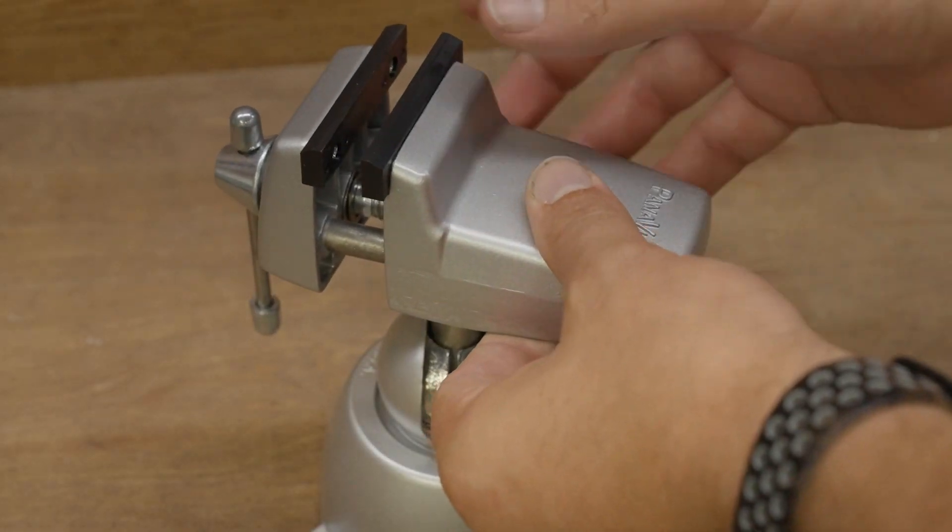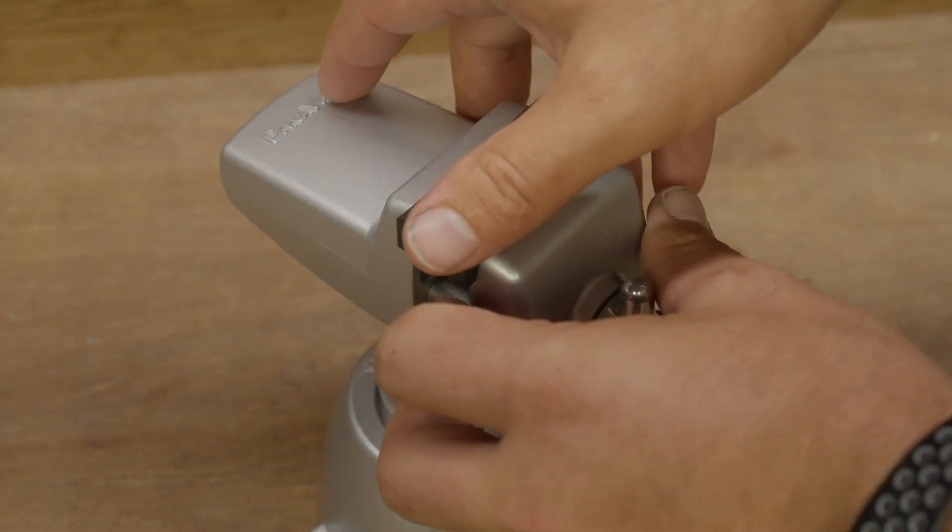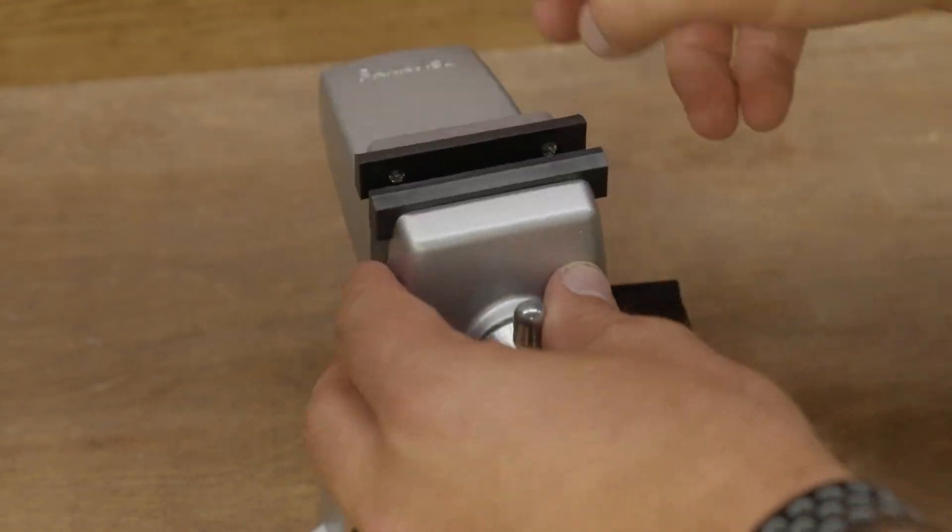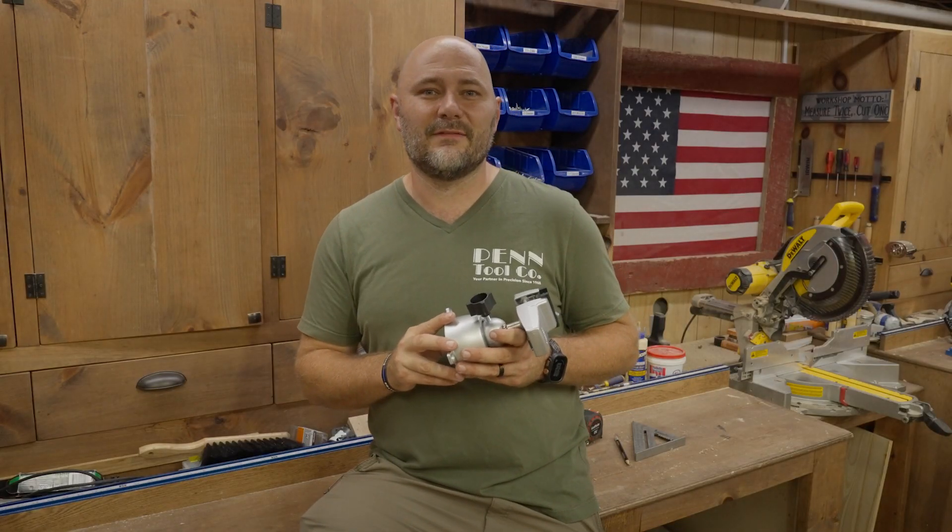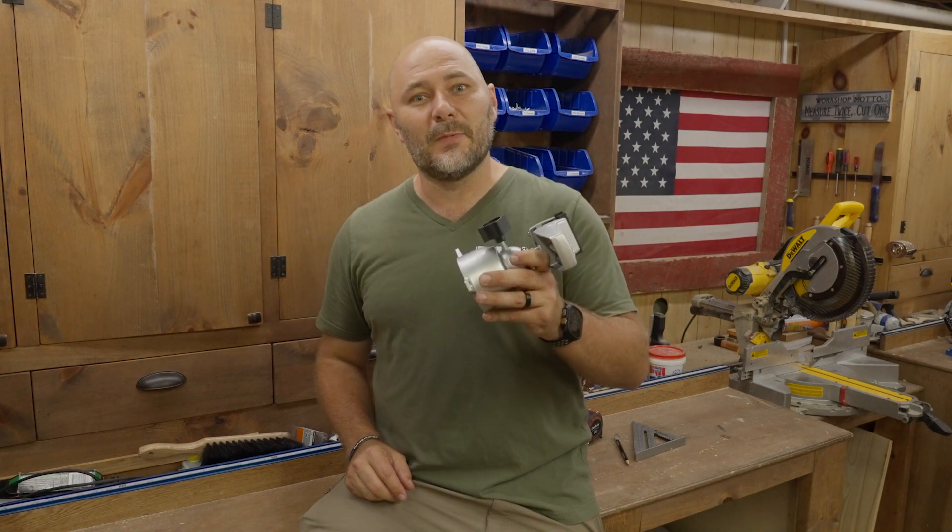My favorite thing about this incredible vise is that it has a 90 degree tilt and a 360 degree turn and rotation. Seriously, this is one of the best vices I've ever used. So make sure you check out Pentool Co. and grab your Panavice Model 301.